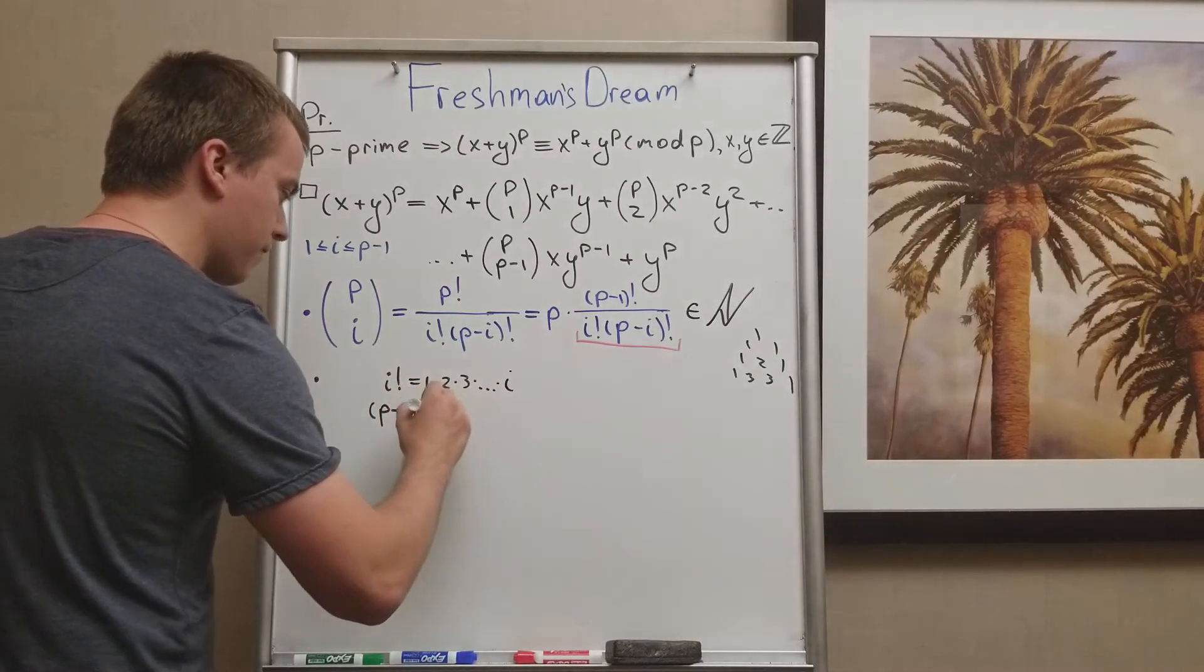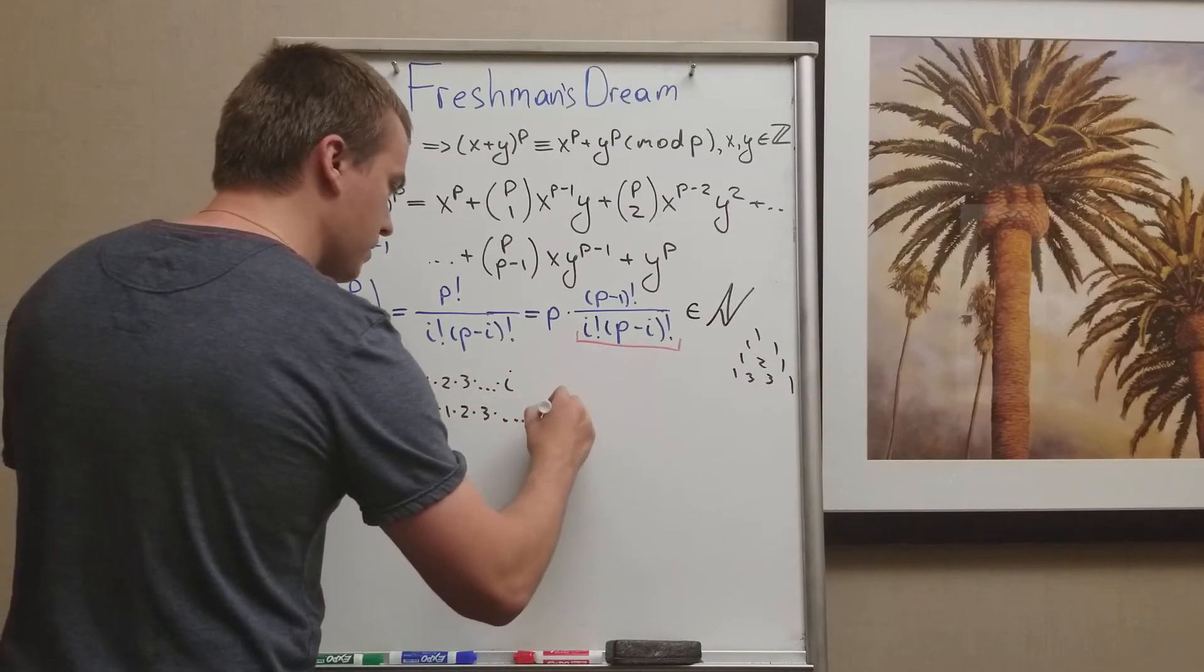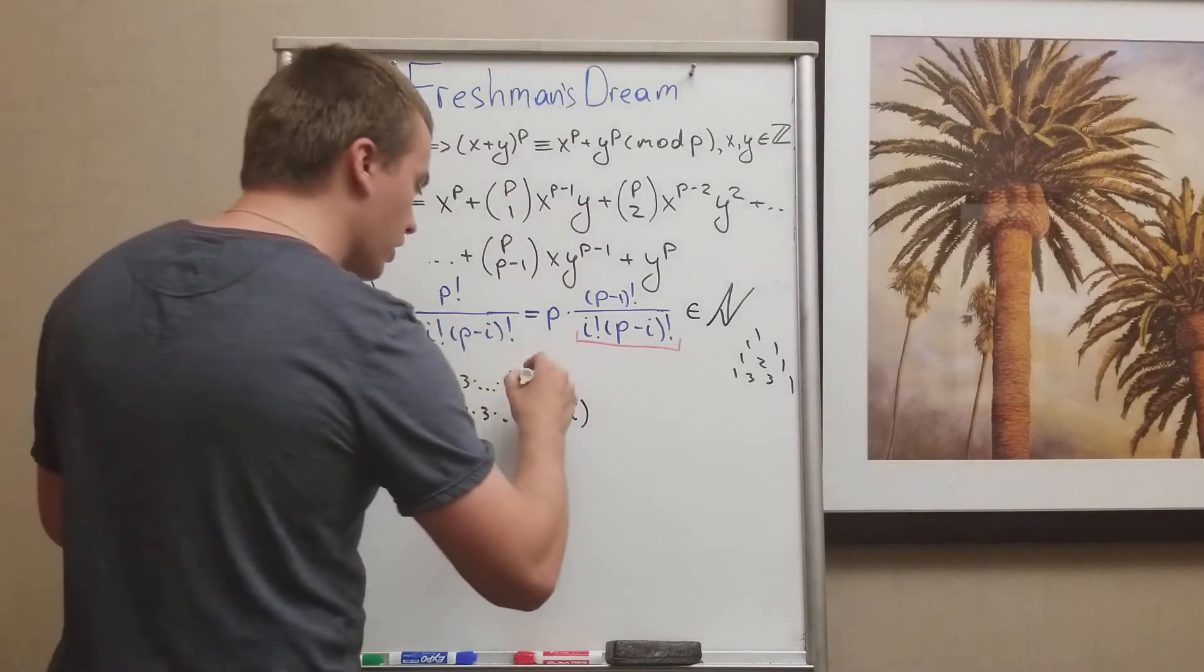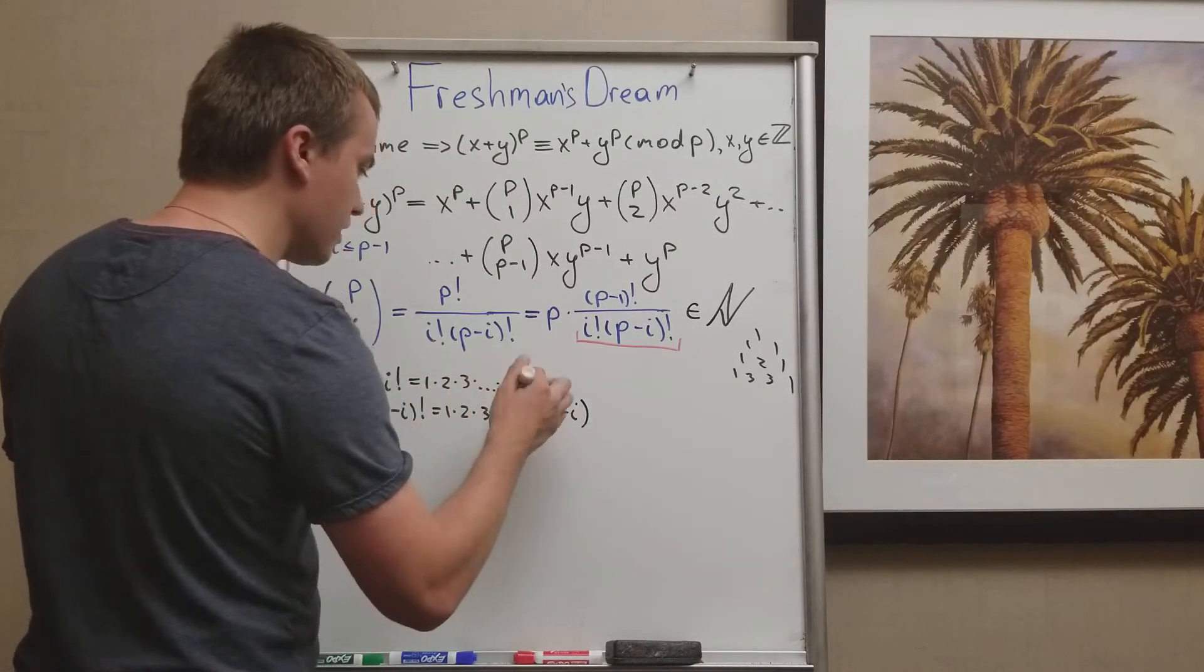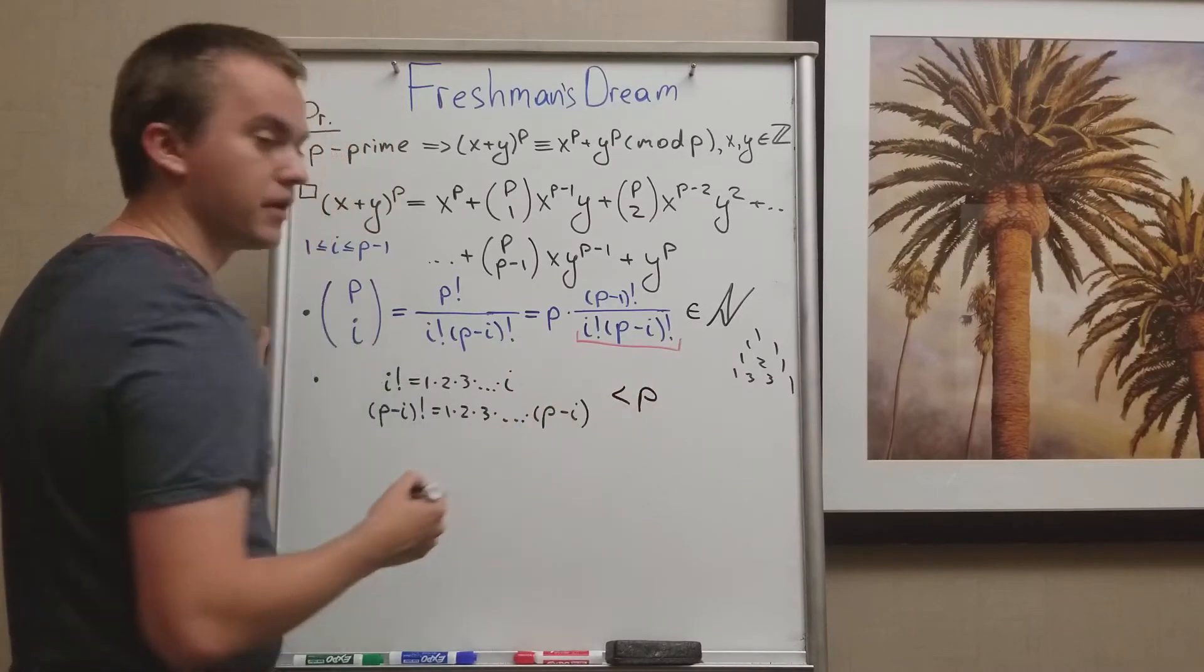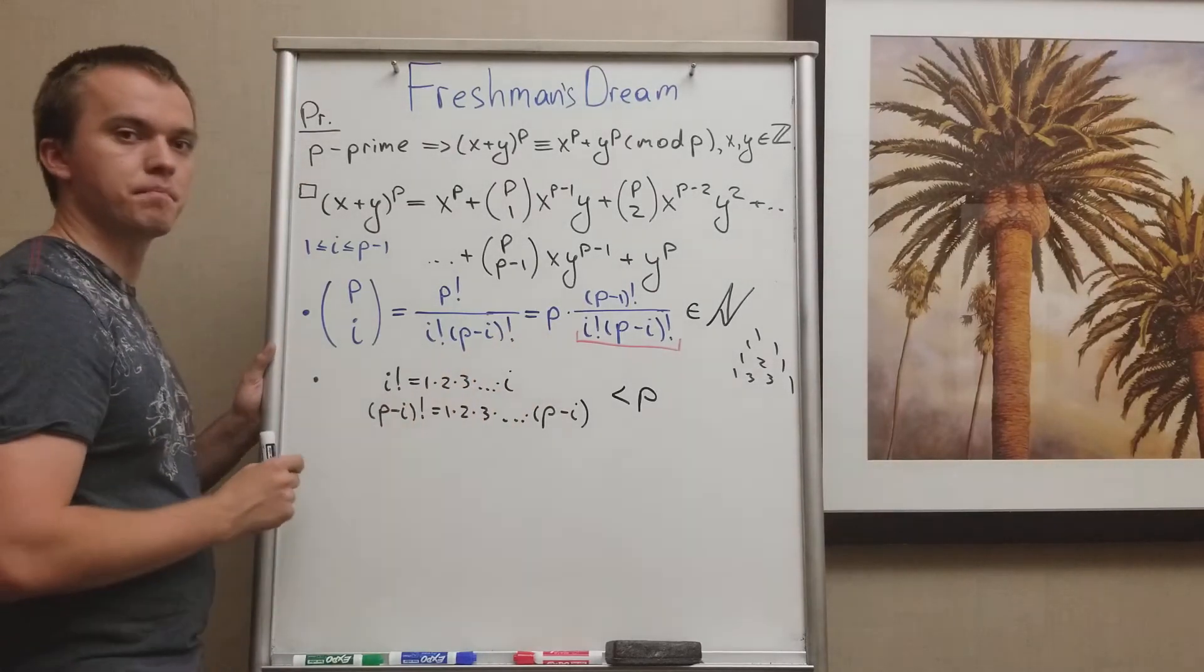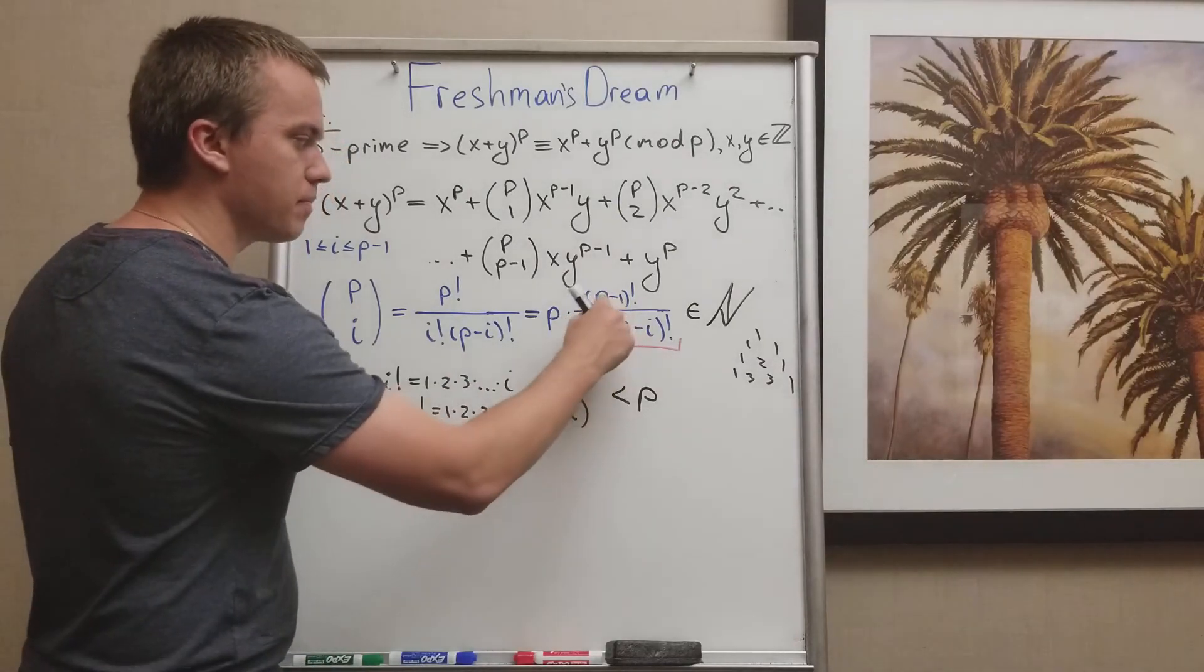Either for i factorial or p minus i factorial, each of these factors, you can see, for each of these factors, they're going to be less than my prime number p. So it means any of these factors cannot divide this p. So any of these factors, they must divide p minus 1 factorial.